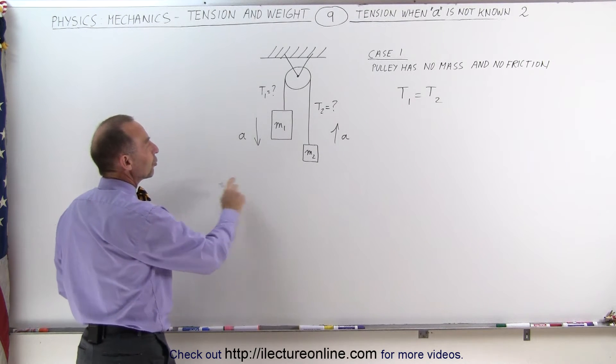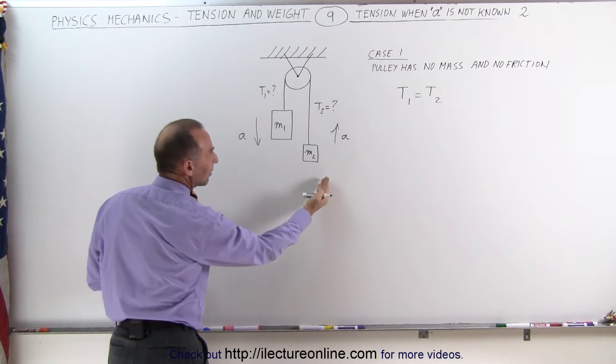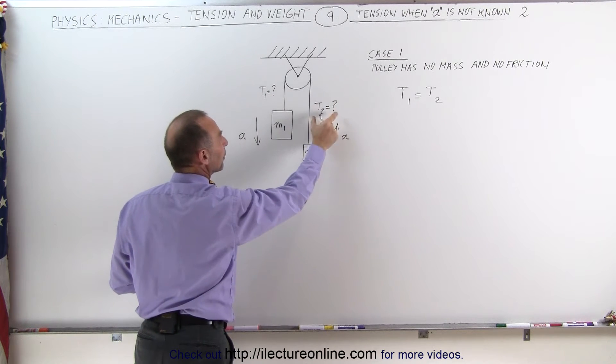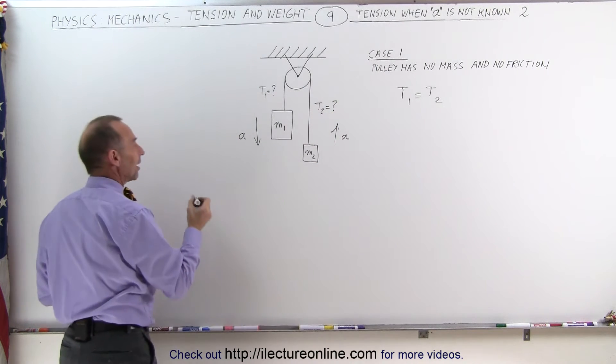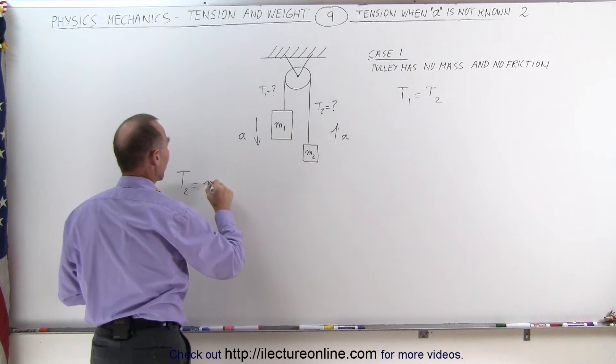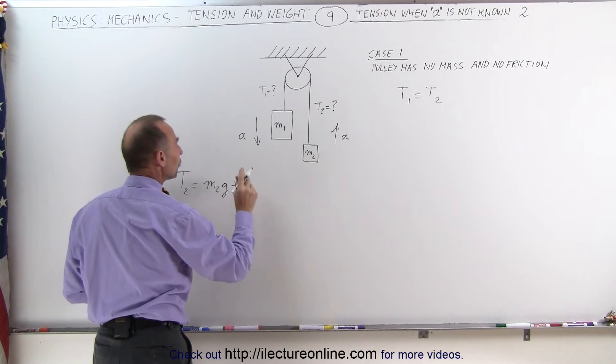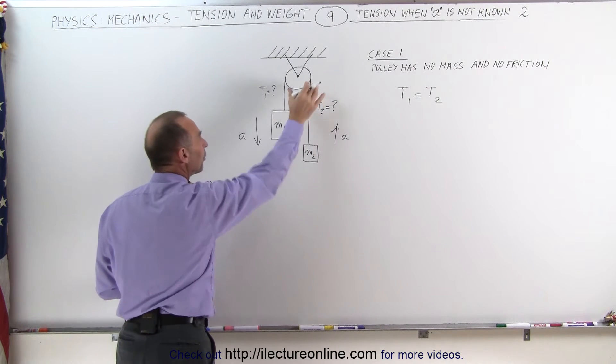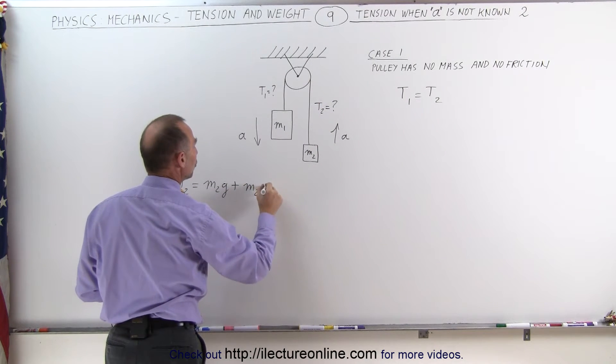To find the tension here, let's go to mass 2. Realizing that mass 2 is accelerating upward, we can find out what the tension is on that side. We can say that T2 is equal to the weight of this object, which is M2G, plus the force required to accelerate it upward, which would be M2A.